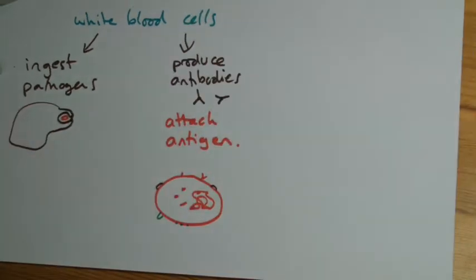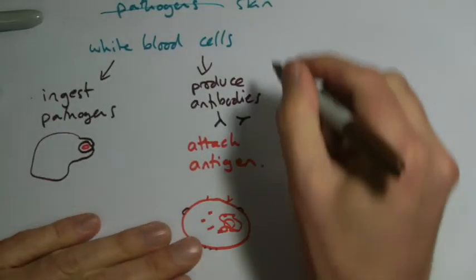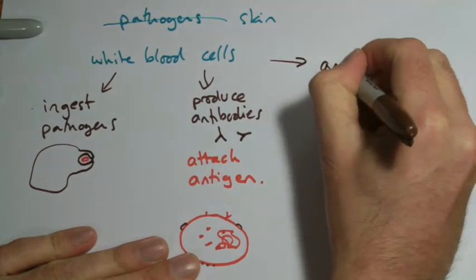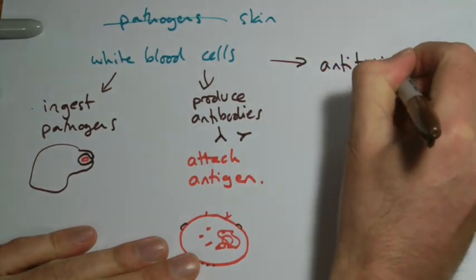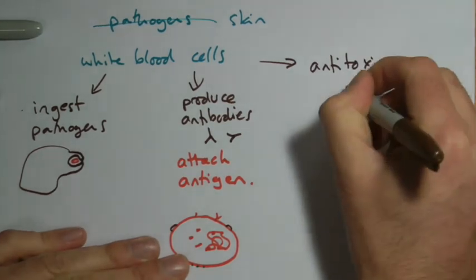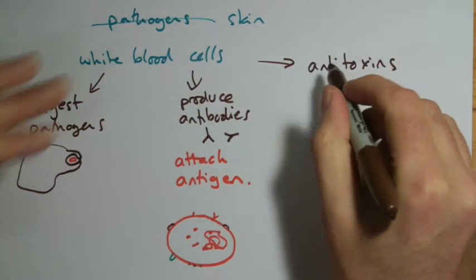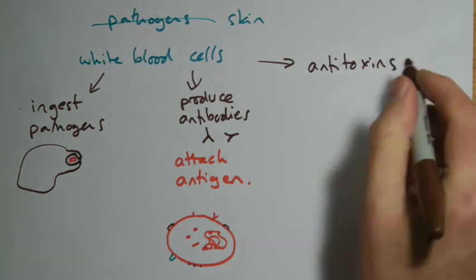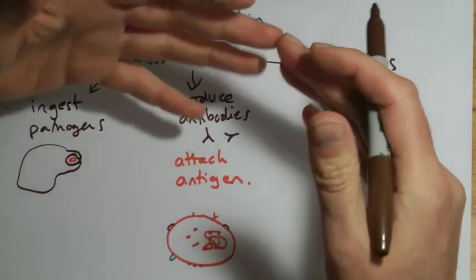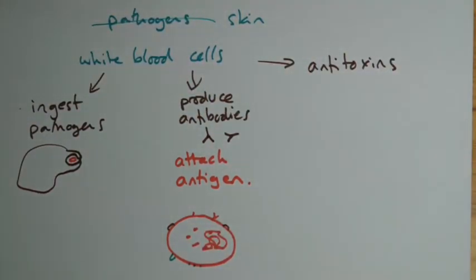And just the other one to say is some white blood cells produce anti-toxins. Remember that some bacteria release toxins into your body and that can make you ill. Some white blood cells release these anti-toxins, which is a substance that will neutralize or get rid of those anti-toxins for you.